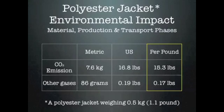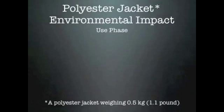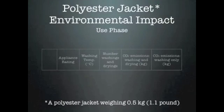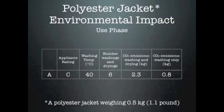The same study, released in 2009, examined the environmental impact of one polyester jacket produced in China, and found that CO2 emissions for material, production, and transport phases was about 16.8 pounds, or about 15.3 pounds for one pound of polyester jacket. The use phase has a lesser environmental impact for the polyester jacket than the cotton t-shirt because it gets washed less frequently and at lower temperatures.